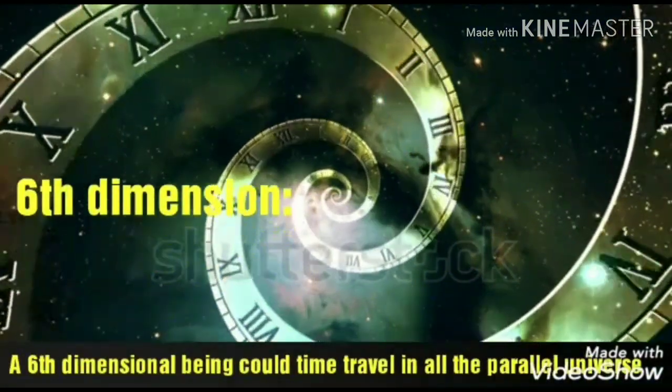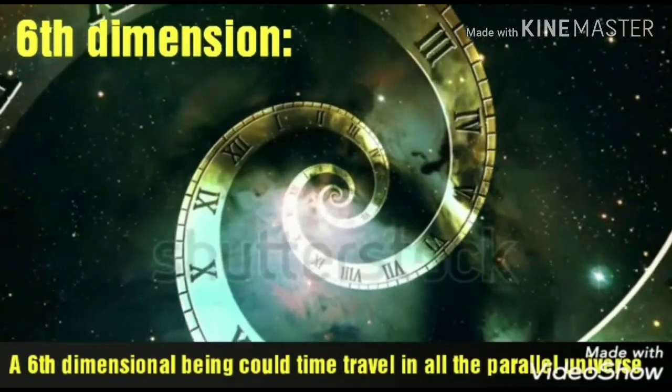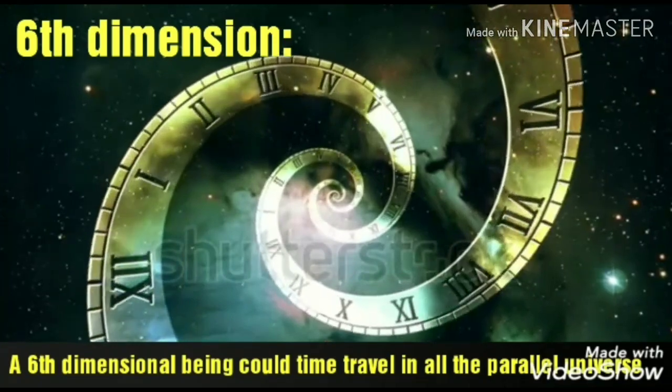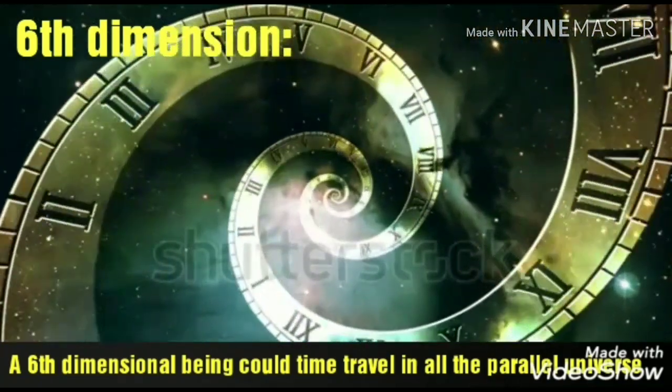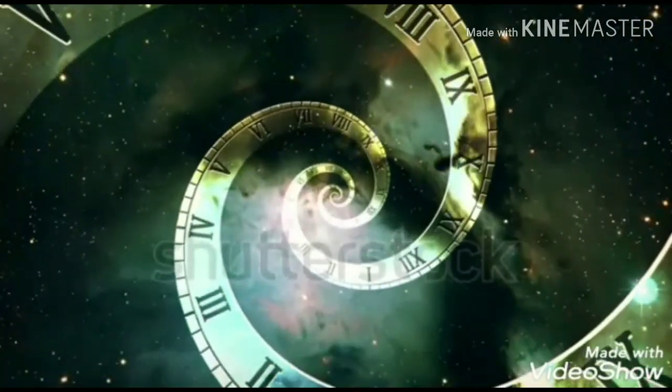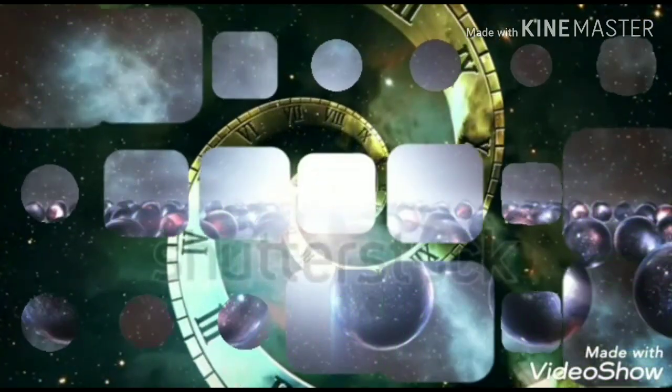Seventh, sixth dimension. It represents time and space of all the parallel universes and has 64 mathematical points. A sixth dimensional being could travel to all the parallel universes and time travel in all of those universes.